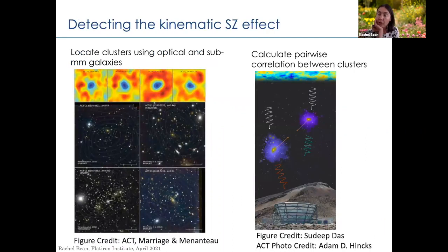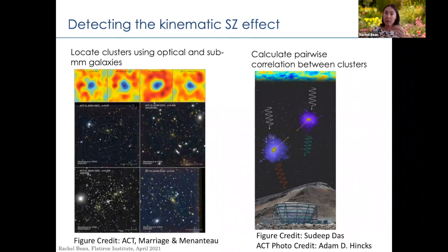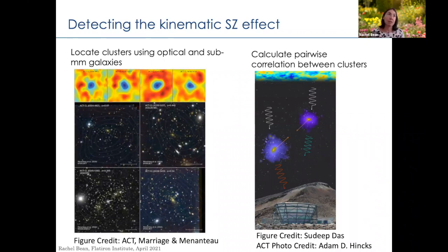The way we look to extract the kSZ is to utilize the fact that the kSZ comes from motions of clusters, and those motions are correlated with each other. We expect clusters to be in-falling relative to their gravitational potential, gravitationally attracted to each other, so we expect correlations in peculiar velocities between clusters. By looking at pairwise correlations — the pairwise in-fall of clusters relative to each other — that allows us to extract out this effect. We identify clusters typically by identifying optical members, usually luminous red galaxies, as proxies, using optical surveys to locate them both spatially and in redshift space.